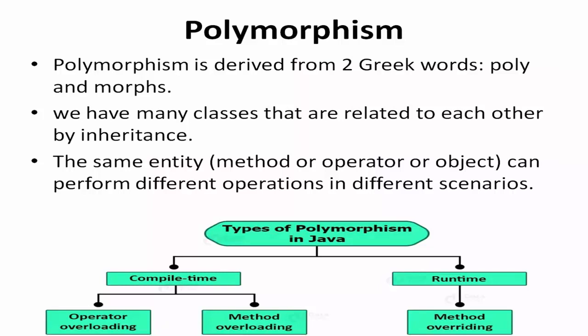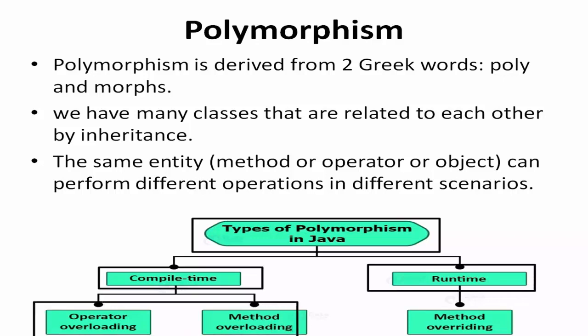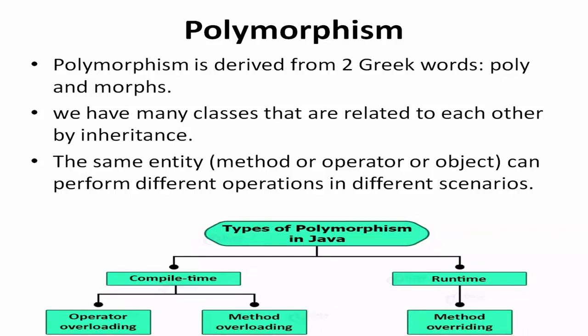Polymorphism is derived from the Greek word 'poly' and 'morphos'. We have many classes that are related to each other by inheritance. The same entity, method, operator, or object can perform different operations in different scenarios. The types of polymorphism in Java are compile-time polymorphism and runtime polymorphism. In compile-time polymorphism, we have operator overloading and method overloading, whereas in runtime polymorphism, we have method overriding.